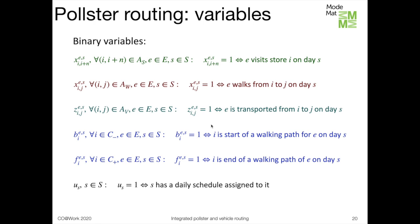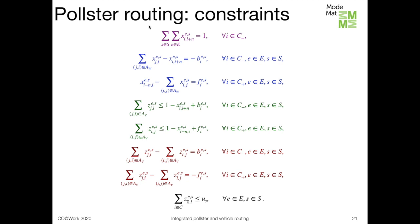There are also two sets of variables that mark the start and end of walking paths within service routes of pollsters. So b_{i,e,s} equals 1 if node i is the start of a walking path for pollster e on day s, and f_{i,e,s} equals 1 if i is the end of a walking path for e on day s. Finally, there is one binary variable u_s for each day in the time horizon that specifies whether day s has a daily schedule assigned to it or not.